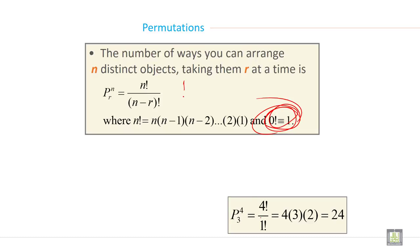So P4,3 is equal to 4 factorial divided by 1 factorial, equals 4 into 3 into 2, equals 24. This is permutation.